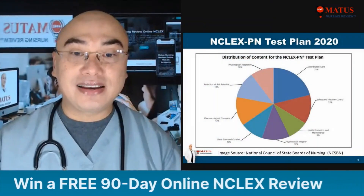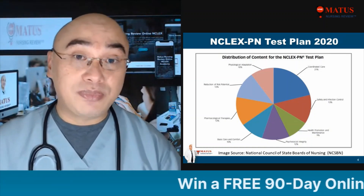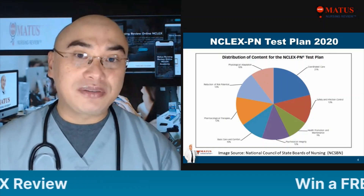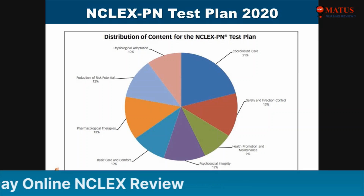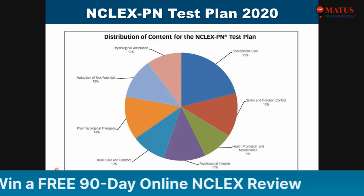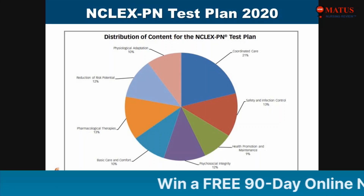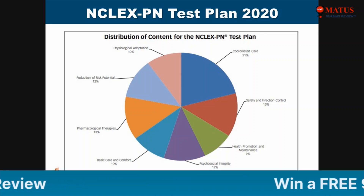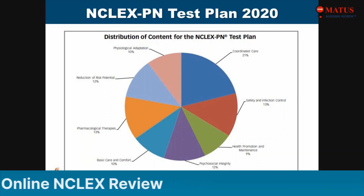Another one is going to be the NCLEX-PN test plan. The NCLEX-PN test plan was updated this year, 2020. The decision last April was to increase the passing standard a little bit, so the test is a little bit more difficult — the passing standard has been increased in 2020. The revision for this NCLEX-PN test plan will be in 2023, so it's every three years. For the NCLEX-PN test plan, a big bulk is coordinated care, which is around 21%, and you also have infection control and pharmacology.